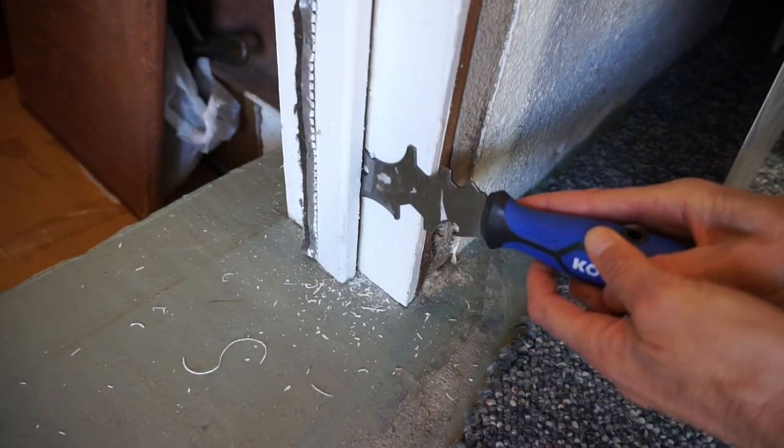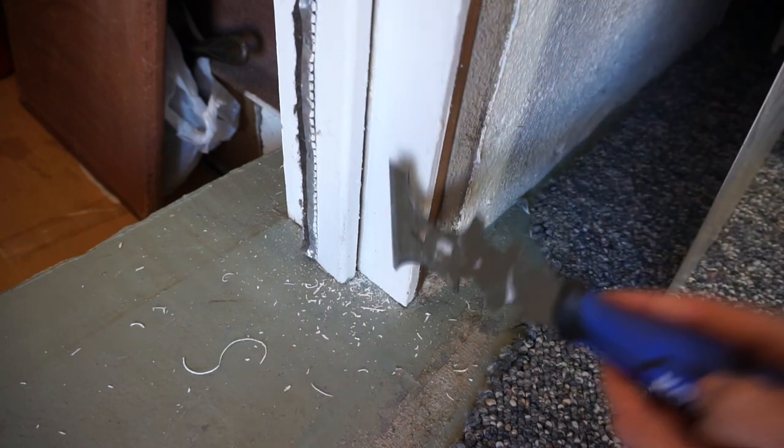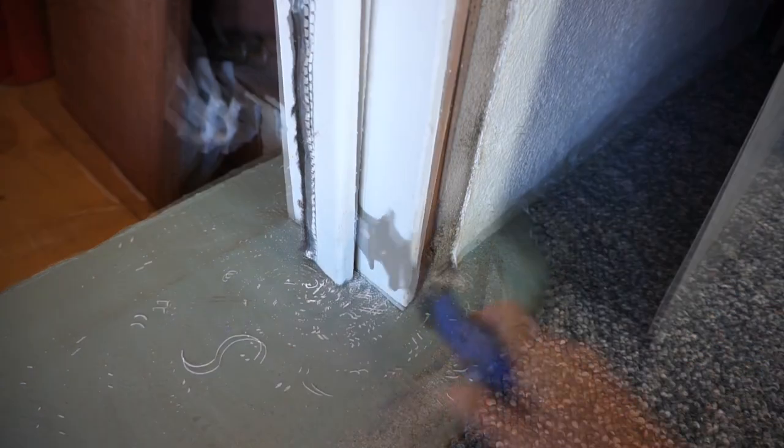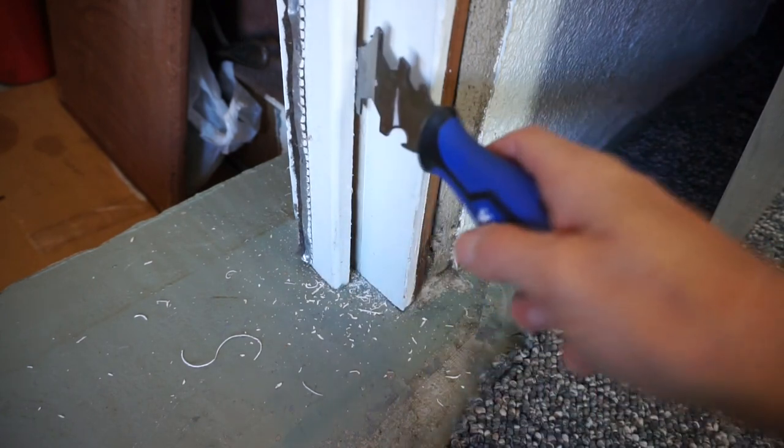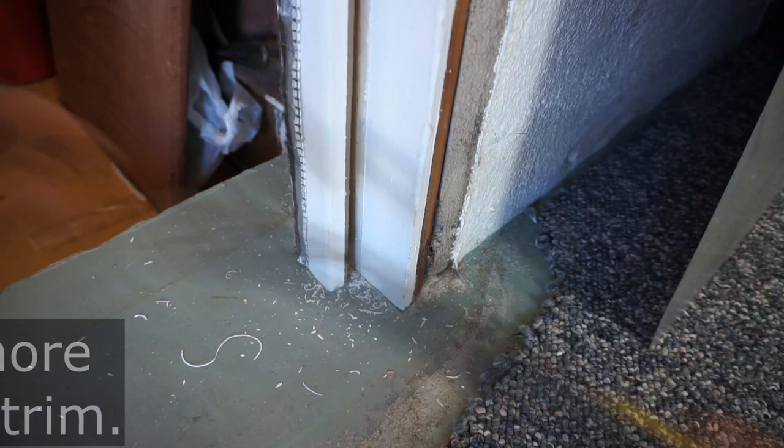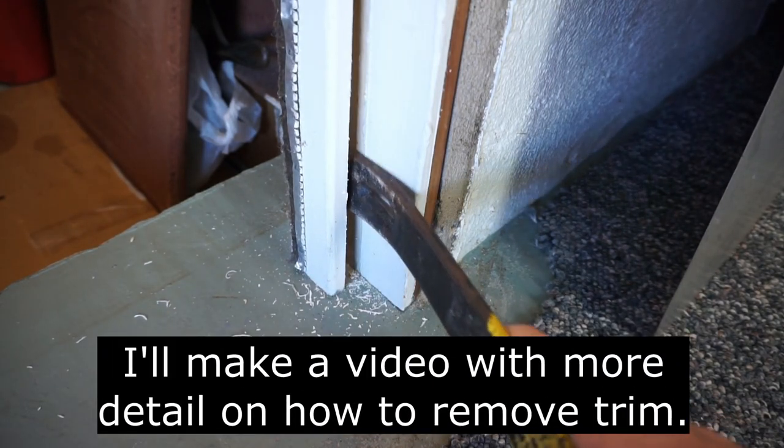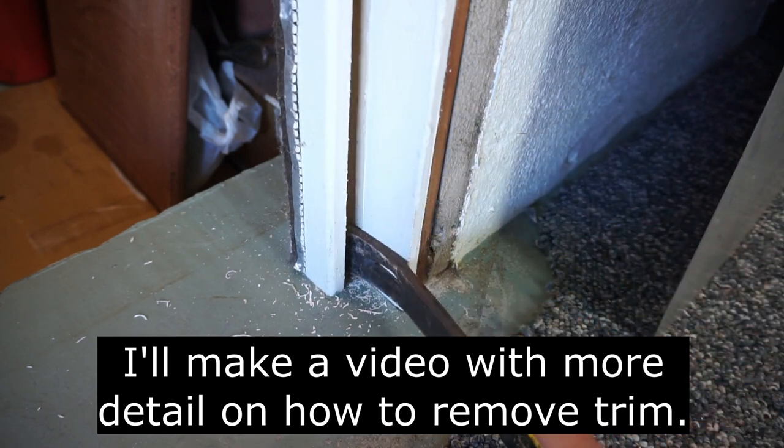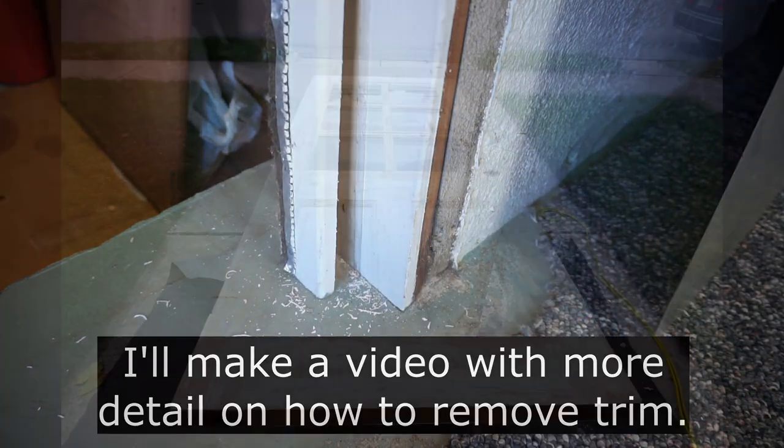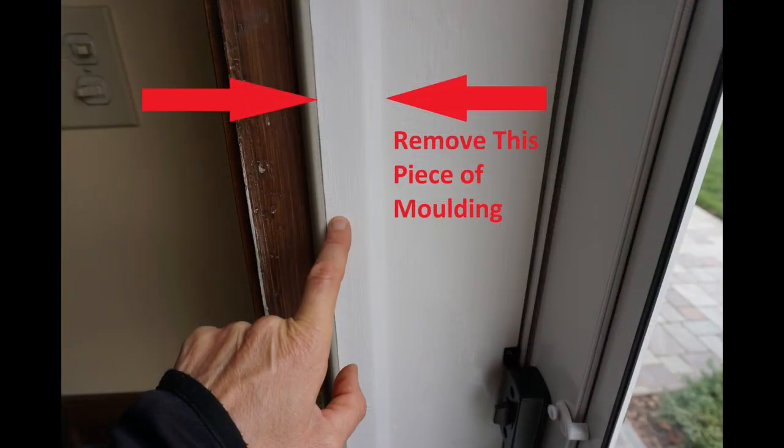Then pry off the three pieces of door molding from the door jamb. I'm refurbishing the door and the wood around the doorway. You just need to remove the doorstop molding.